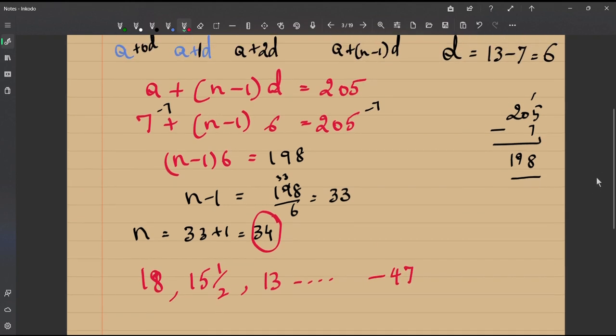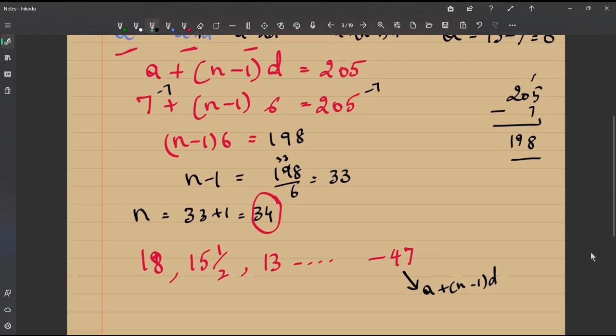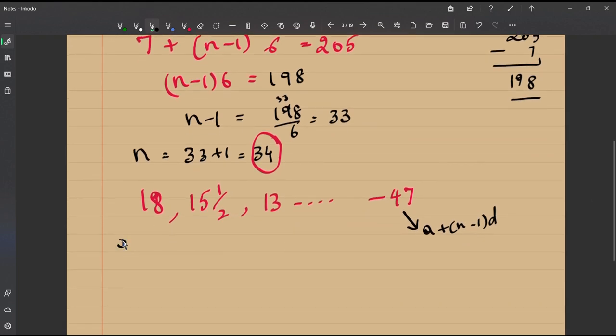So following the same, the terms a plus d, a plus 2d so on, minus 47 stands for a plus n minus 1 d, isn't it? From here let us try to find what is n, because we know what is a, isn't it? a is 18, the first term a is 18 and we also know what is d, d is the second term minus the first term, 15 and a half minus 18.